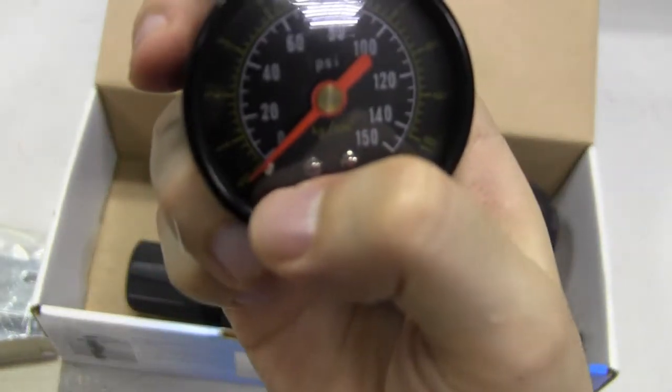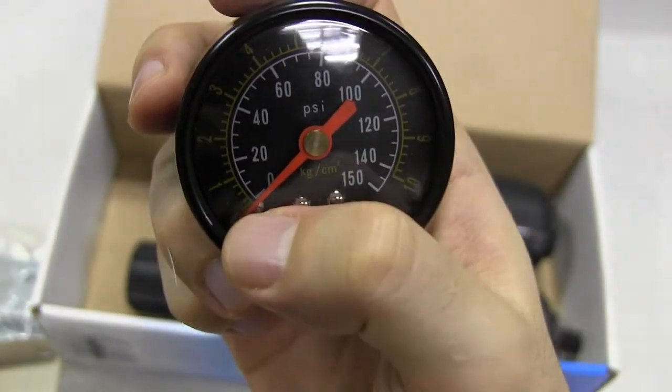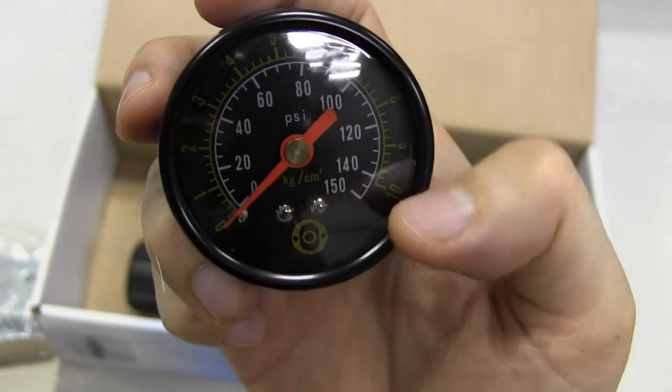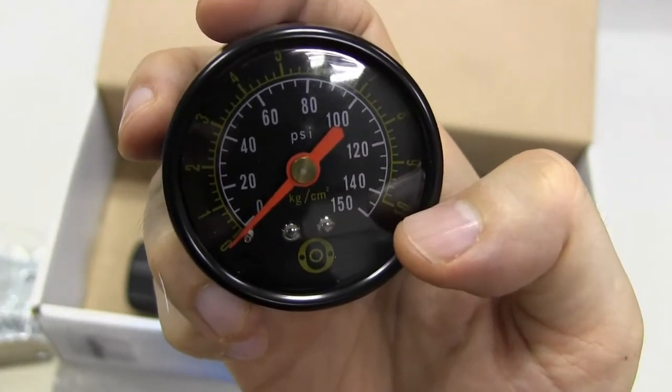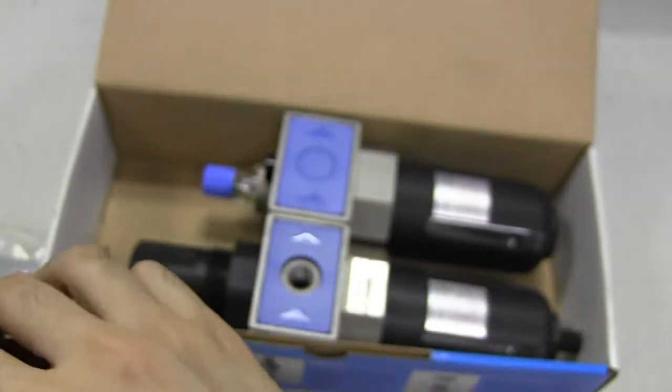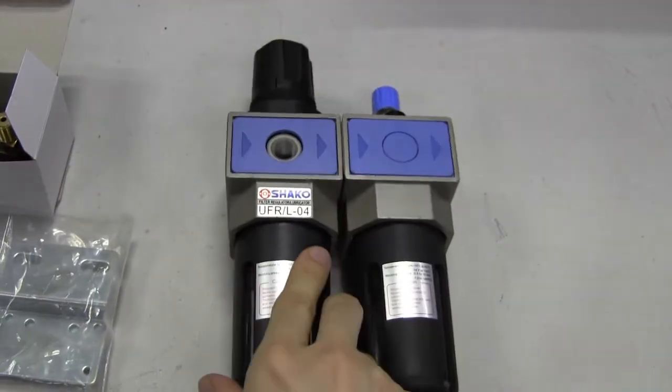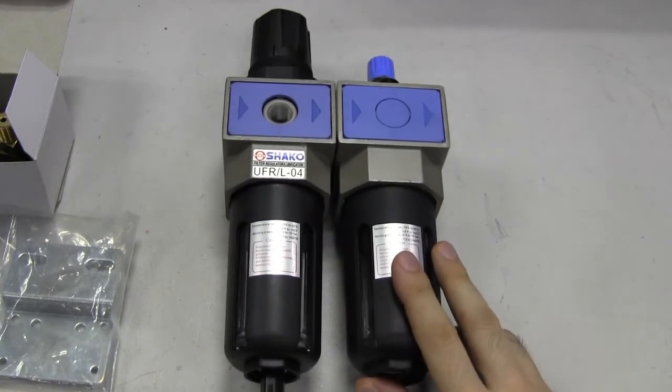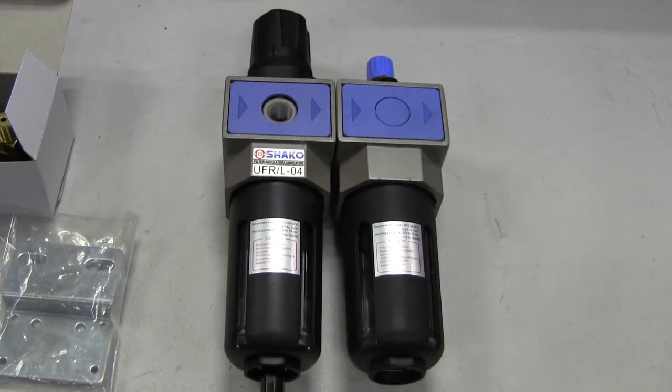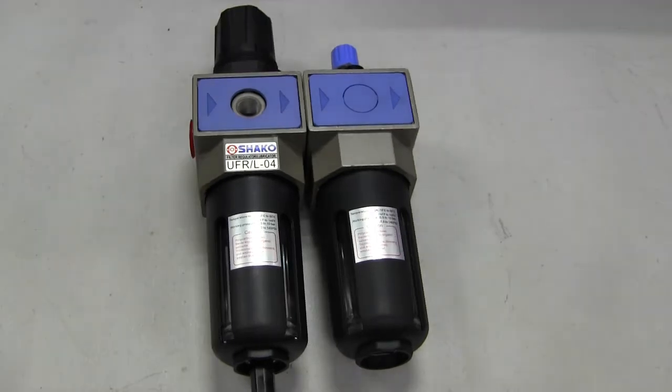This is the pressure gauge, 0 to 150 psi and a dual gauge 0 to 10 kg per cm squared. It's a black face. Here we have the filter regulator and lubricator by Shaco Pneumatics.